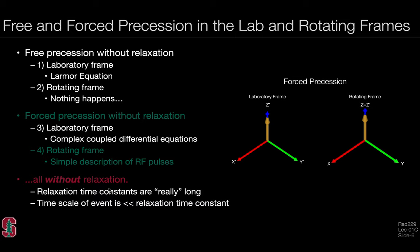Ignoring relaxation makes sense principally when the relaxation time constants are long relative to RF pulse events, or equivalently when the timescale of the RF pulse is much shorter than the relaxation time constants. This ends up being a good assumption for many RF pulses and helps simplify and provide more intuitive understanding of bulk magnetization dynamics. More generally, we do want to include the effects of relaxation, and that concept is developed in a later lecture.